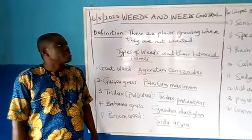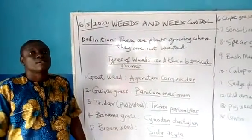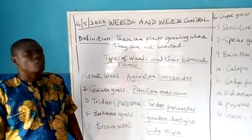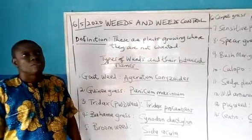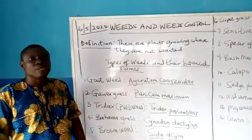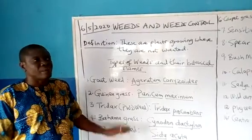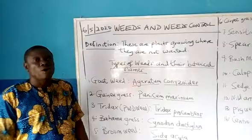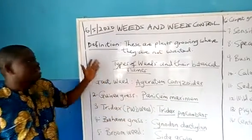Good day class. This is Agricultural Science for SS2 and the topic on the board says Weeds and Weed Control. It's a very simple topic and we have heard of the word weeds before. We want to look at it critically as it pertains to agriculture and crop production. Let's look at the definition.